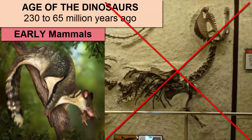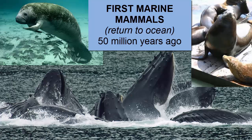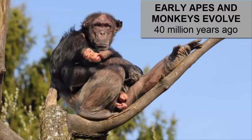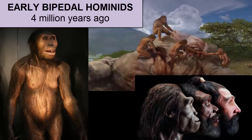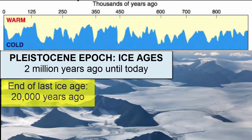Early mammals co-existed with the dinosaurs, but after the dinosaurs went extinct 65 million years ago, mammals continued to evolve to fill the now-empty niches left behind by the dinosaurs. 50 million years ago, some land mammals returned to the ocean, evolving into whales, sea lions, seals, and other marine mammals. The earliest monkeys and apes evolved 40 million years ago, and the oldest evidence we have of early bipedal hominids is 4 million years ago. 2 million years ago, we began the period of cyclic ice ages that we are coming out of today. The last ice age ended only 20,000 years ago.